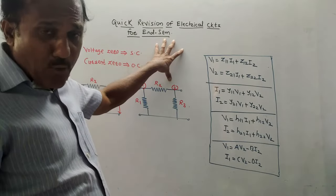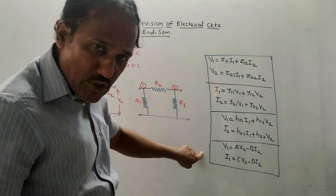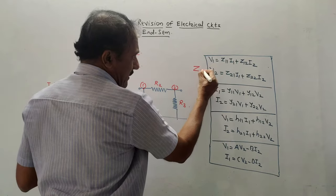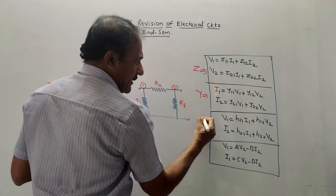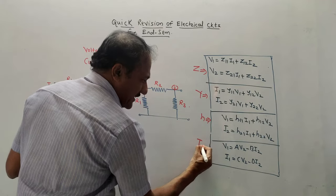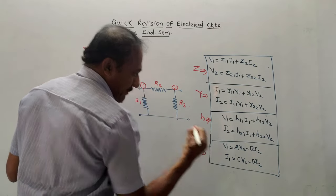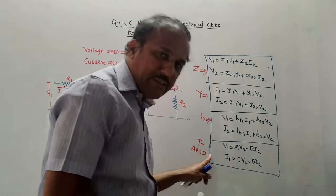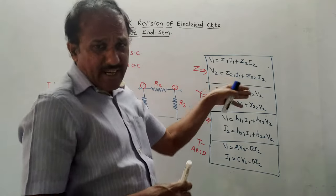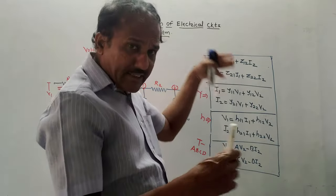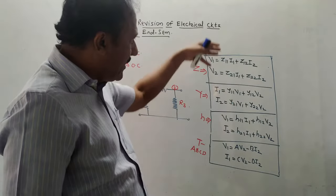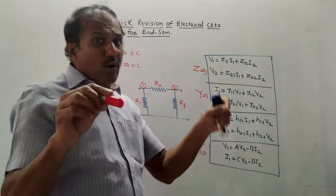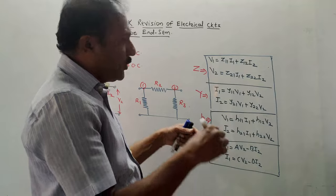Unit number three is two-port network parameters. You should know the defining equation of each and every parameter, written in sequence: first set is for Z parameter, second for Y parameter, third for H parameter, and fourth for transmission — that is ABCD parameter. Do remember there are two names for this: one is transmission parameter, another is ABCD parameters. I already created a video on how to derive the equations for each parameter, so I'm not going to repeat that. The focus here is how to write the terms related to each notation.